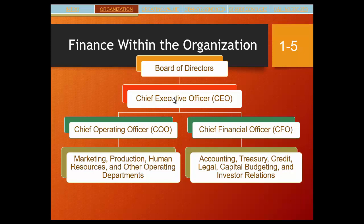The CEO has two main functions. One is to control the operating activities of the business, and usually the chief executive officer hires a chief operating officer to carry out that function. The second function is to assure that the business has enough capital or funds coming in — that's the realm of the chief financial officer. Under the COO are the functional areas: marketing, production, human resources, information systems, logistics, and supply chain. Under the CFO, you'll have accounting, treasury, credit legal, capital budgeting, and investor relations.